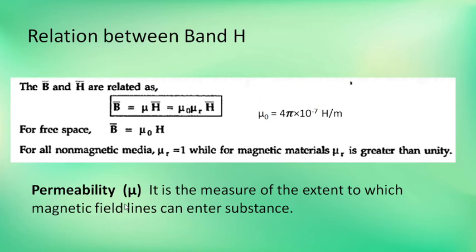As we call it, it is mu naught, mu r, H. Mu naught is in free space. It is equal to 4 pi times 10 raised to minus 7 — Henry per meter.